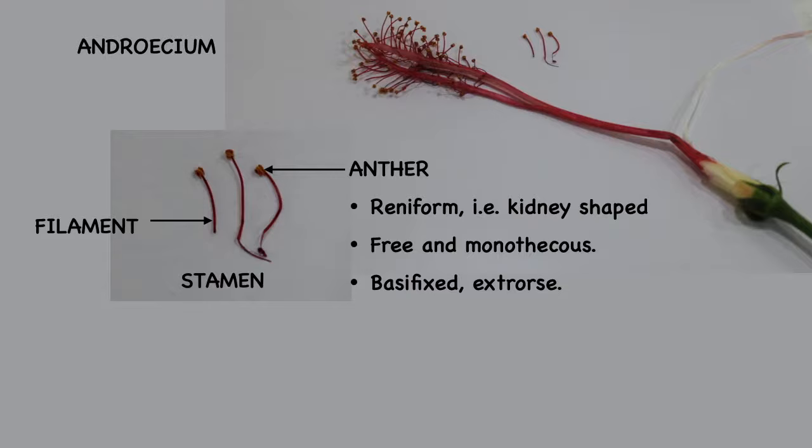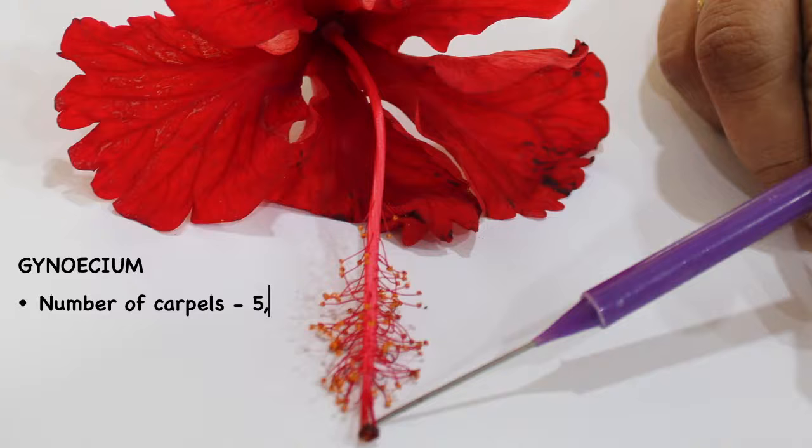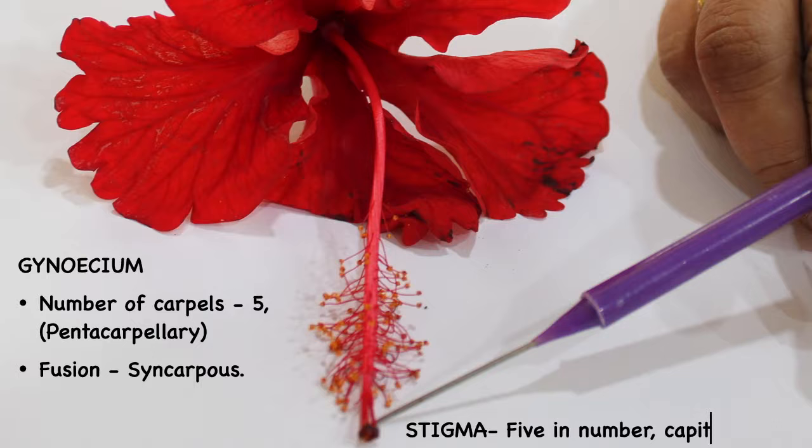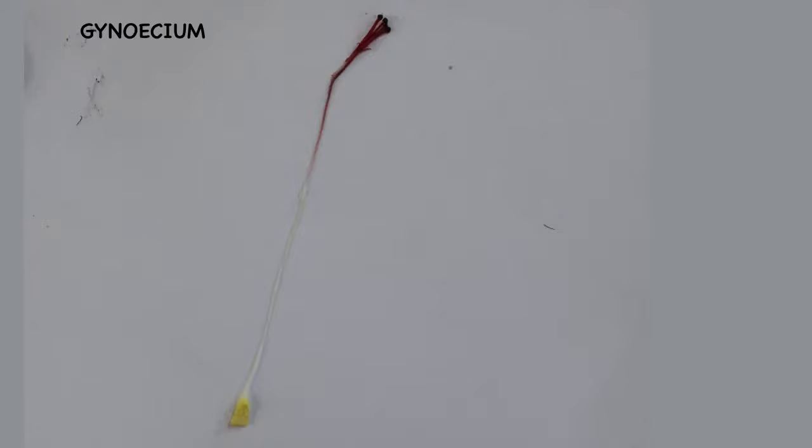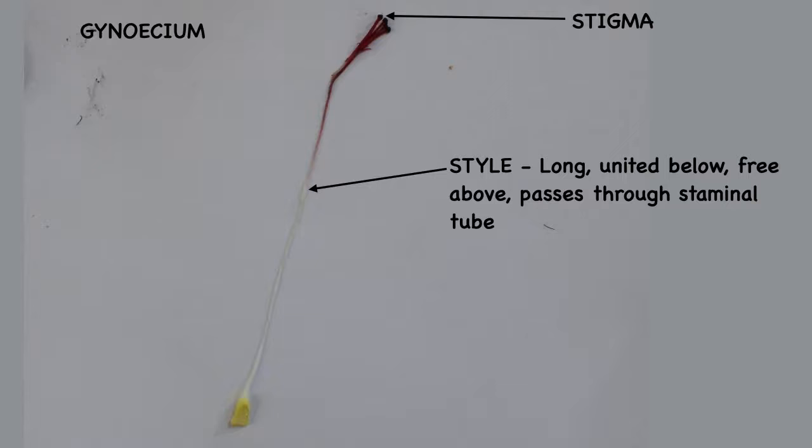Next we see the female reproductive part, that is the gynoecium. We cannot see the entire gynoecium here, but these are the stigmas which are five in number. This is the entire gynoecium taken out from the flower. We can see the stigma, that is the part where the pollen lands; then the style, which is a long tube; and the ovary, which contains the ovules.